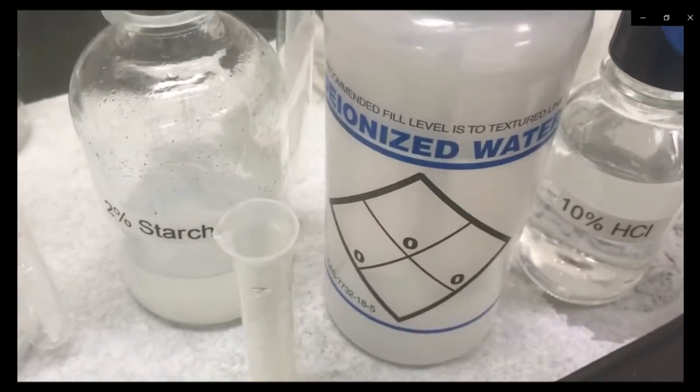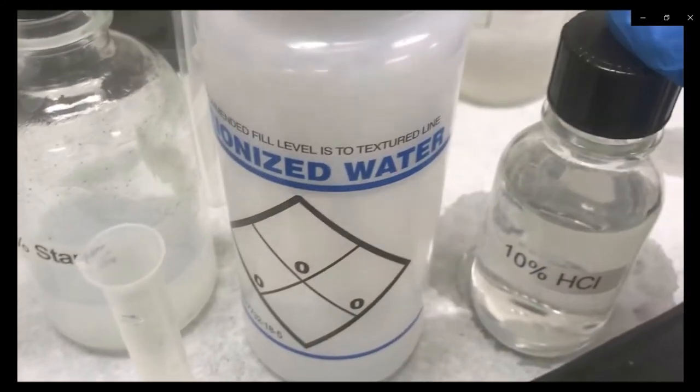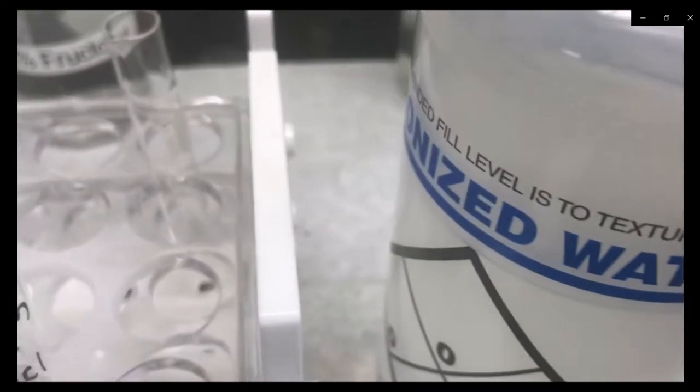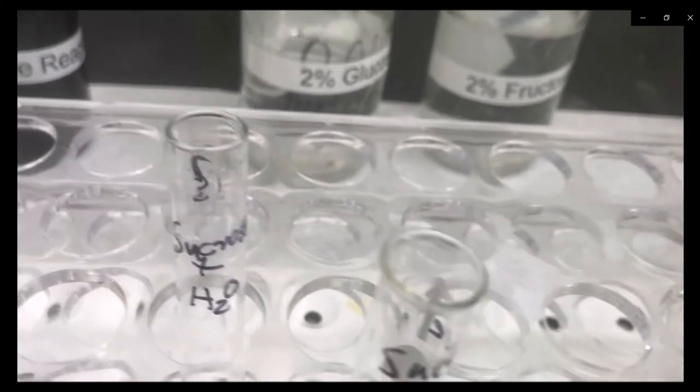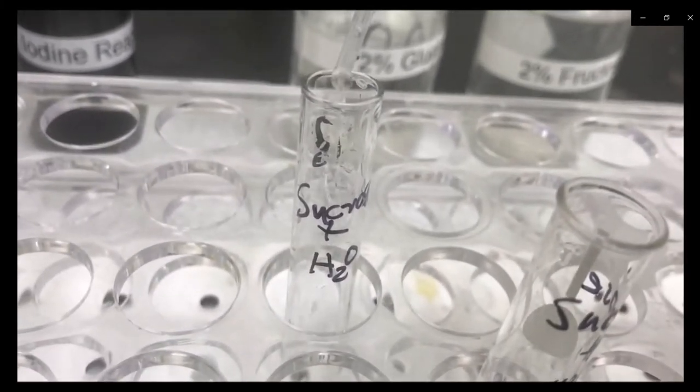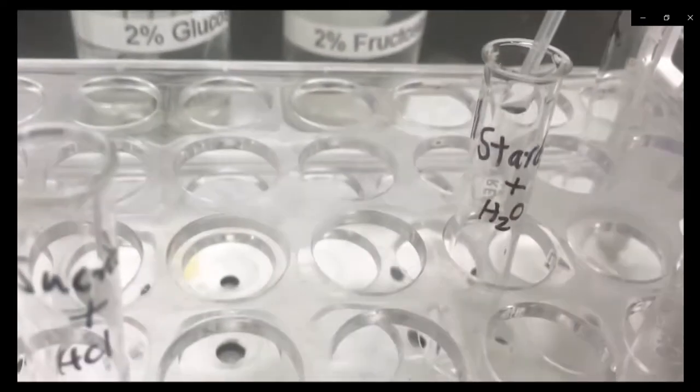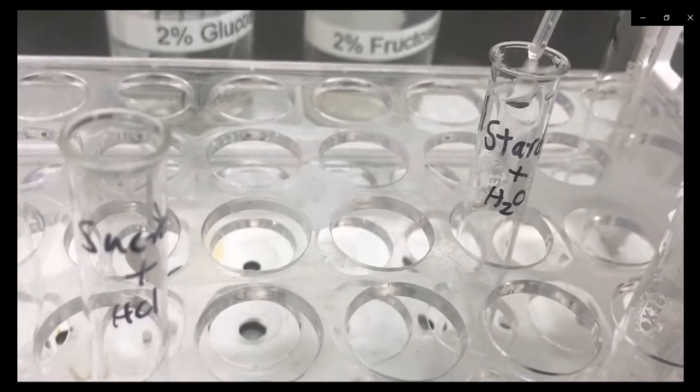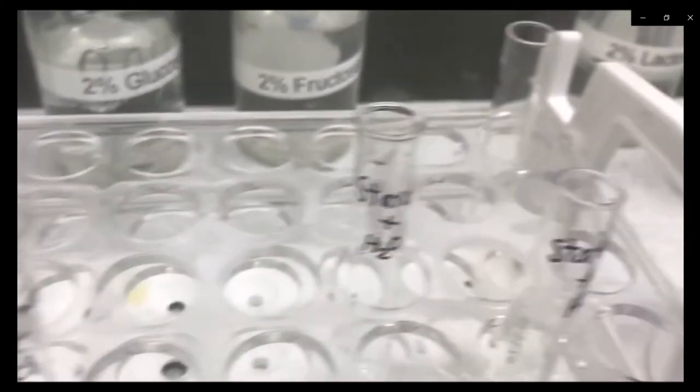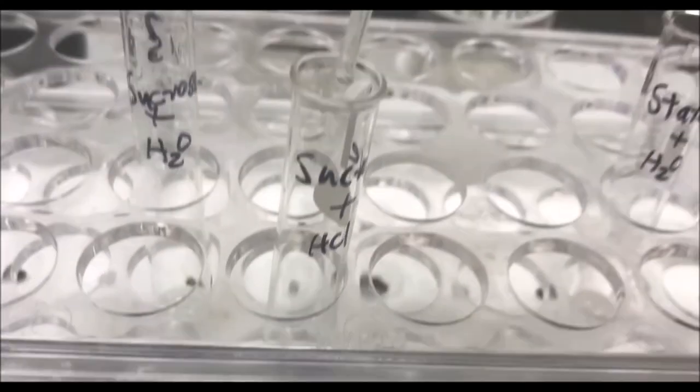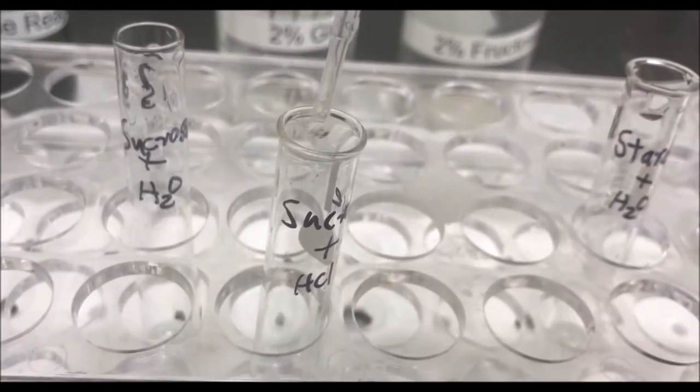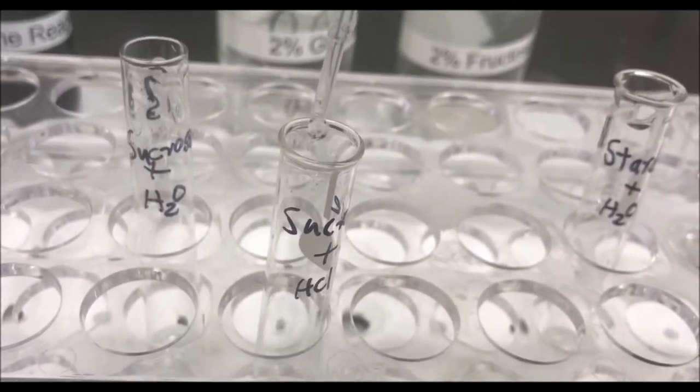Next add deionized water and 10% HCl into the respective labeled test tubes. Add 10 drops of deionized water into the corresponding test tubes. Add 10 drops of hydrochloric acid to the corresponding test tubes.